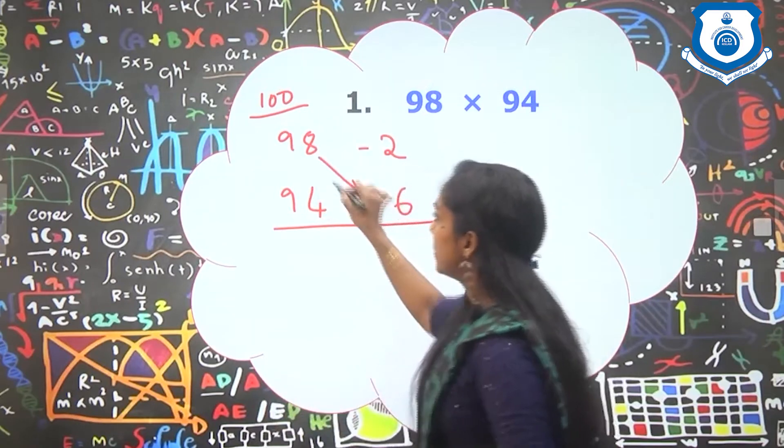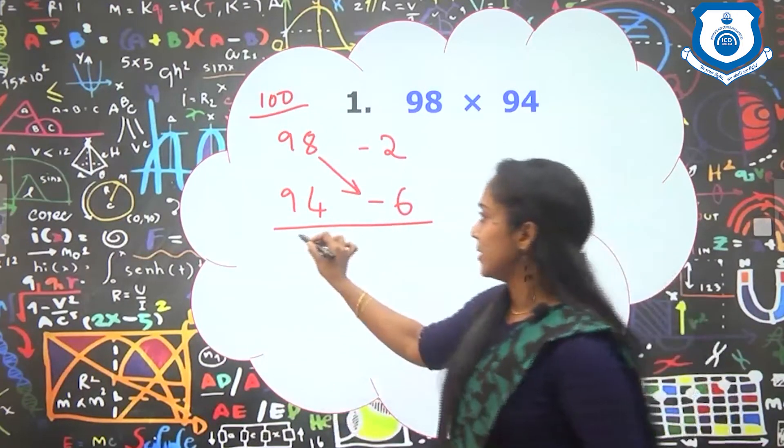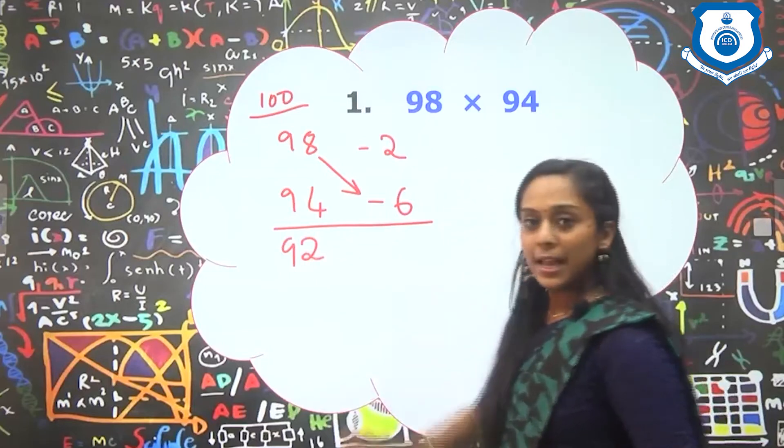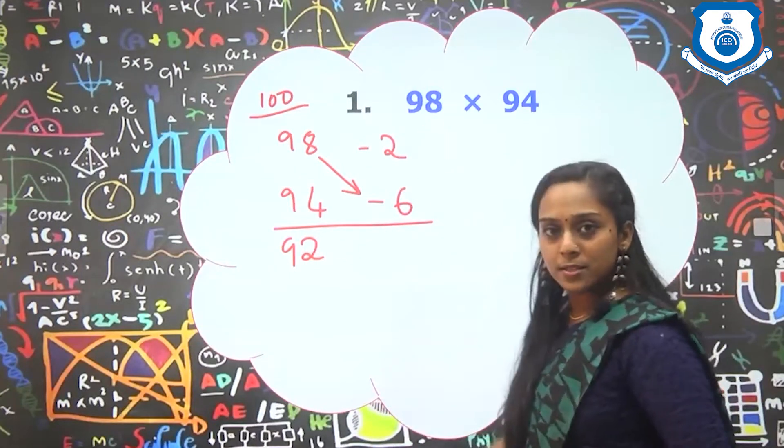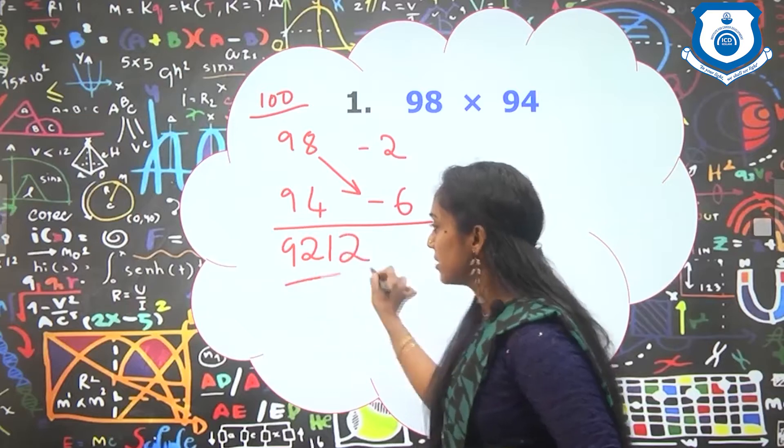So here, next, the second step: 98 minus 6. So that is 92. And third step, minus 2 into minus 6 is plus 12. So our answer is 9212.